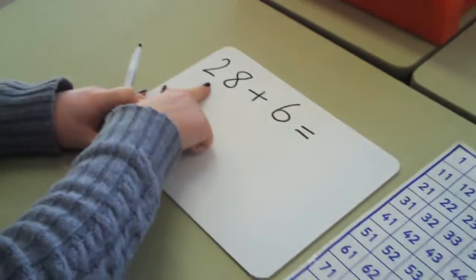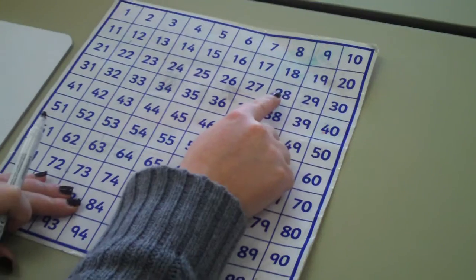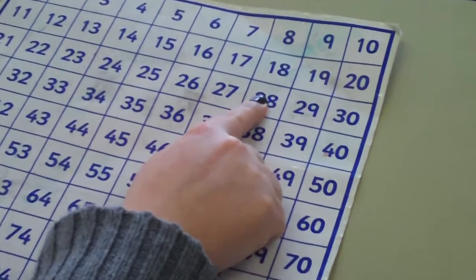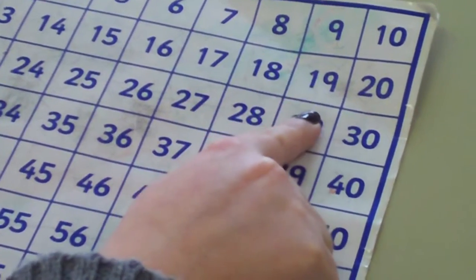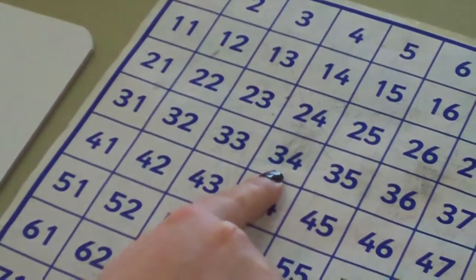First we're going to start with adding and subtracting using a hundred square. For example, 28 add 6. Point your finger to 28 and do 6 jumps. 1, 5, 6, and the answer is 34.